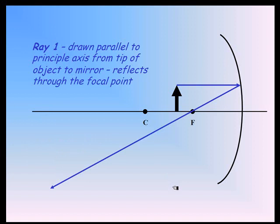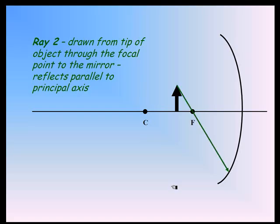The second ray we draw is from the tip of that object through the focal point. So we go through the focal point, and since it's gone through the focal point, it will reflect parallel to the principal axis.